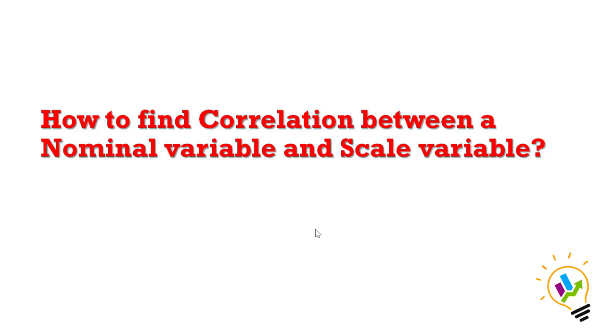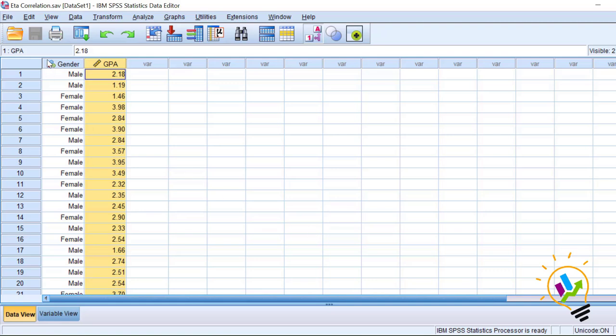Hello, welcome to My Easy Statistics. In this video, I am going to discuss how to find correlation between a nominal variable and a scale variable. Let's see this example. We have gender as a nominal variable and GPA score as a scale variable, and we need to find the correlation between gender and GPA score.